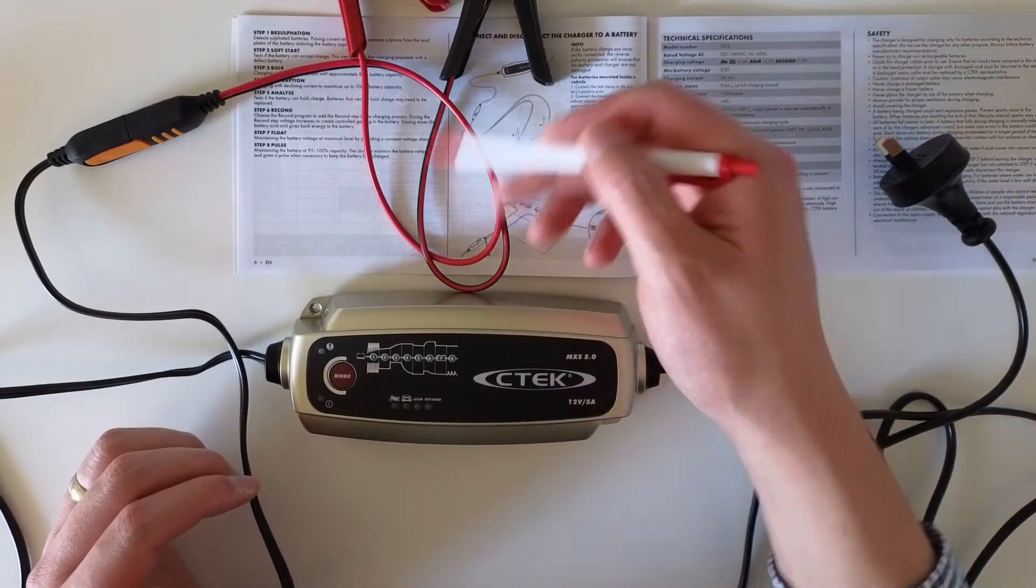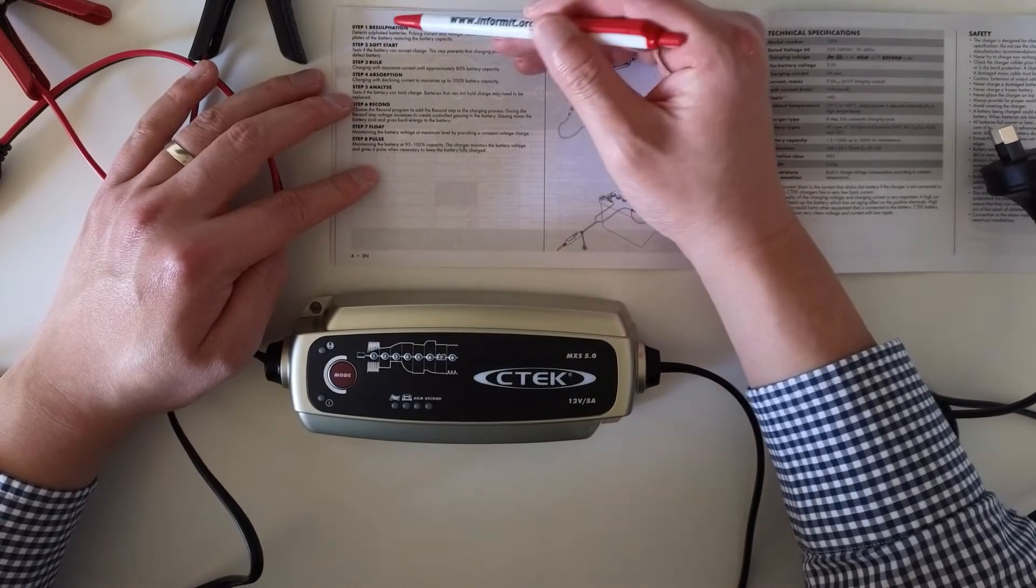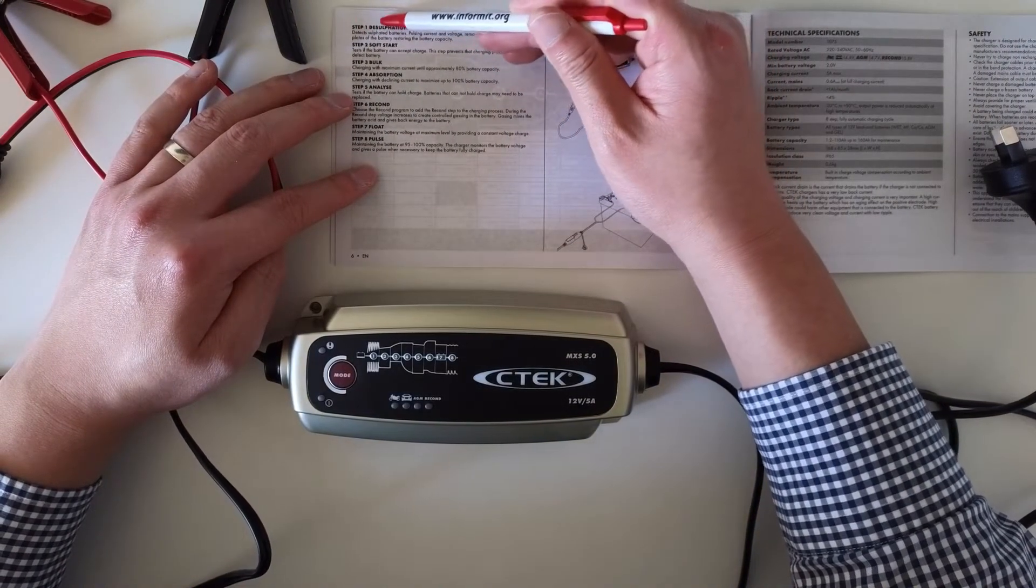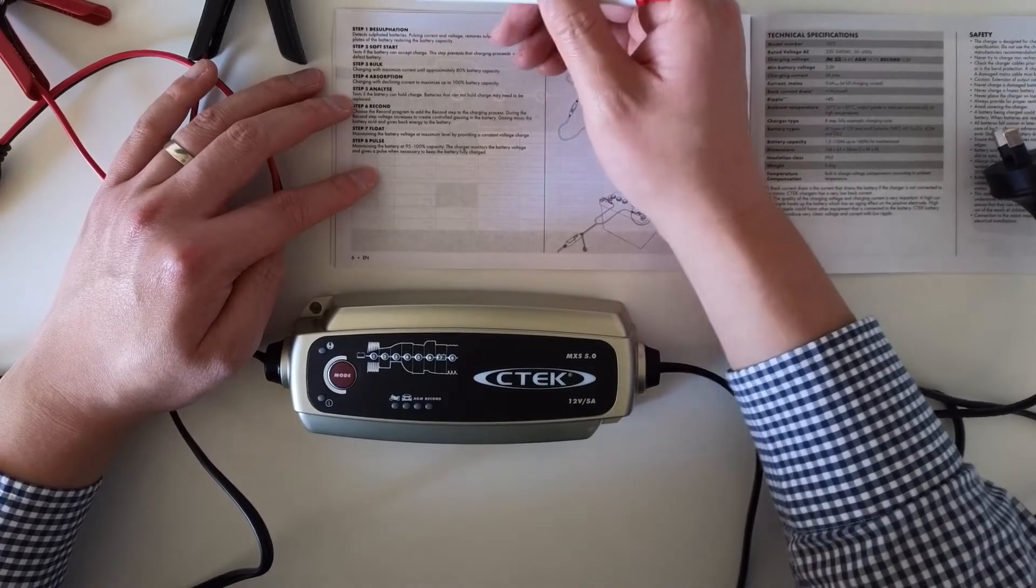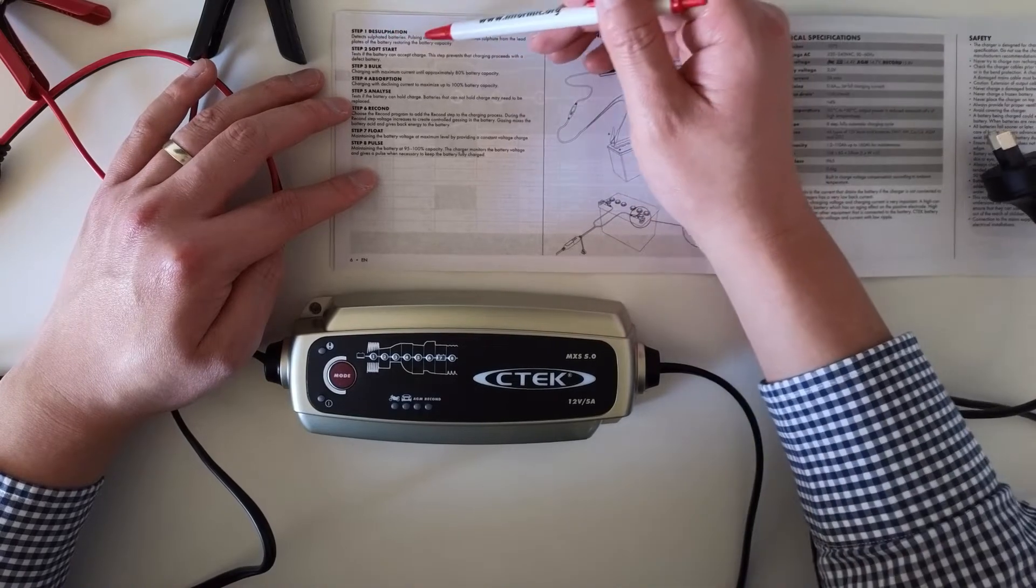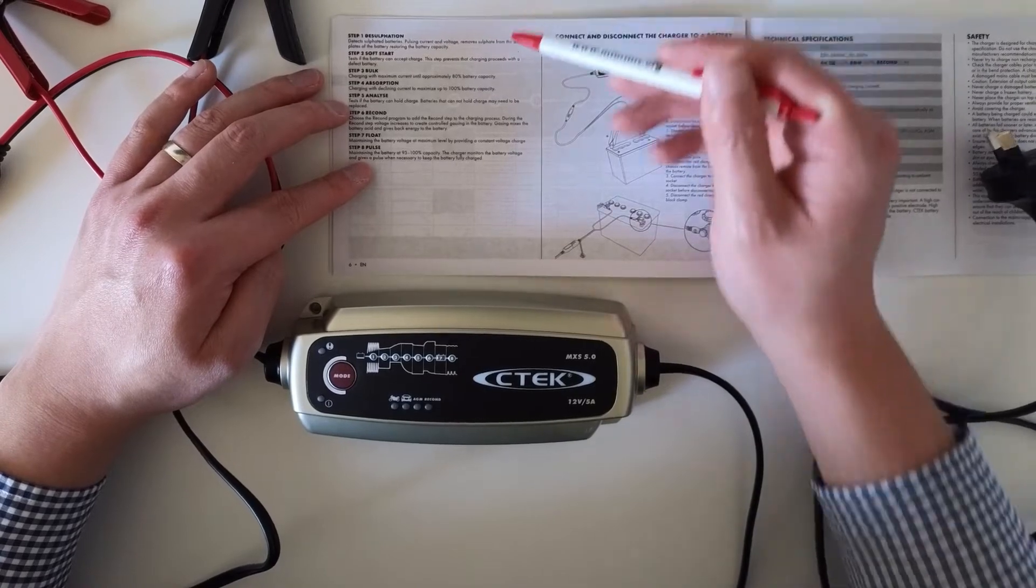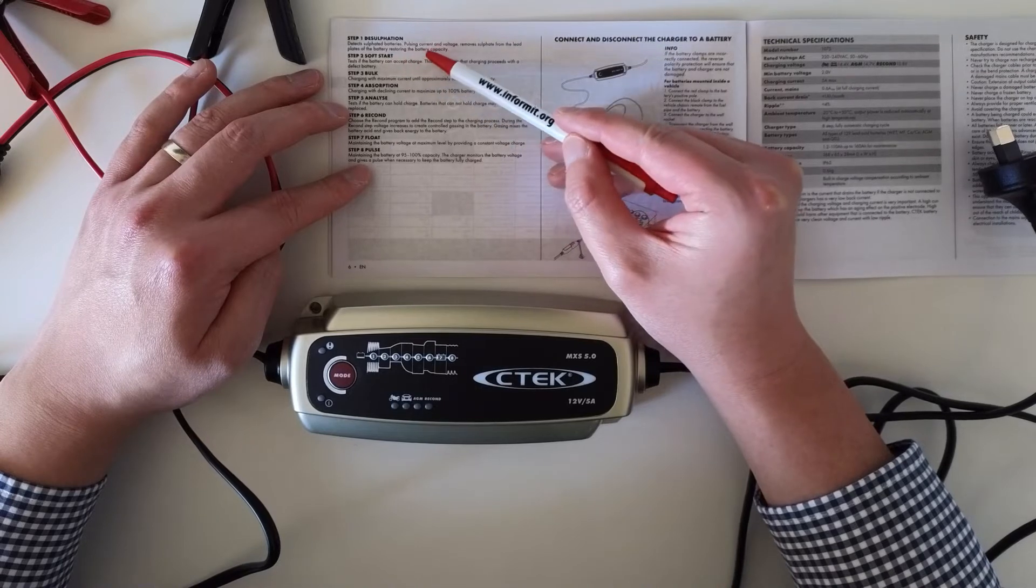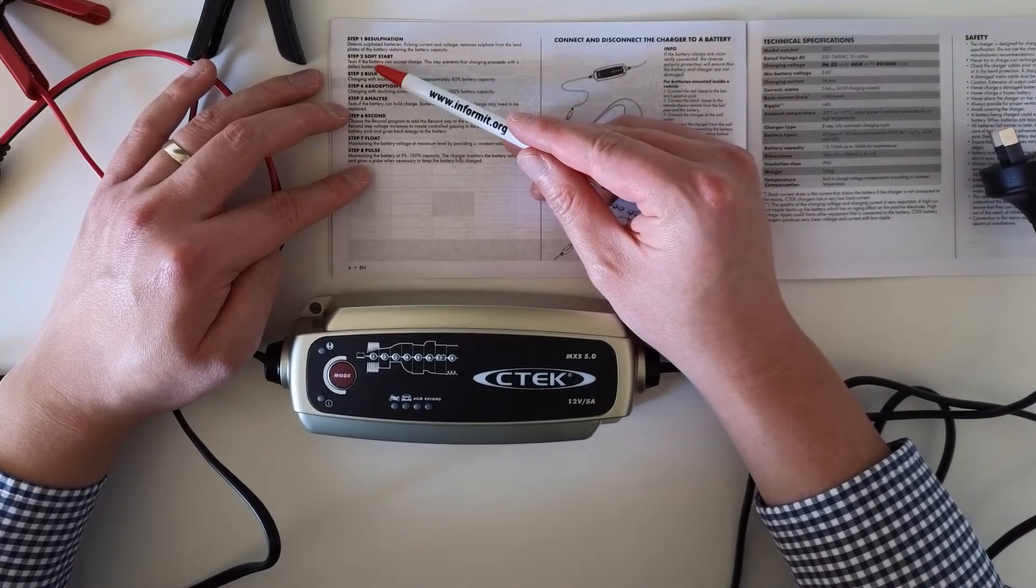Let me walk you through the steps. The first step is what they call desulfation. You would detect sulfurated batteries, pulsing current and voltage removes sulfates from the lead plates of the battery, restoring the battery capacity.